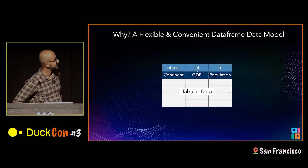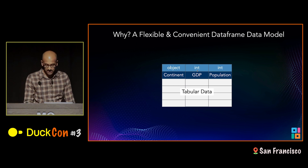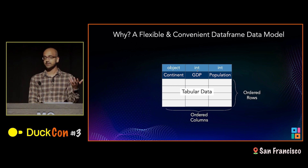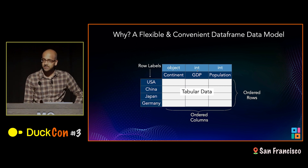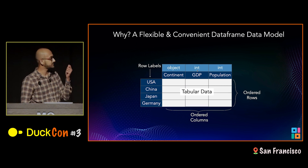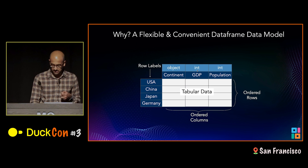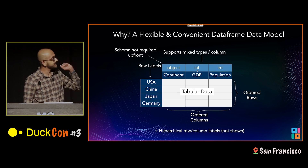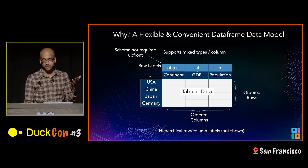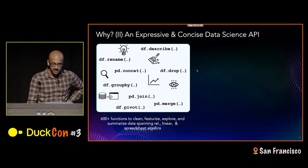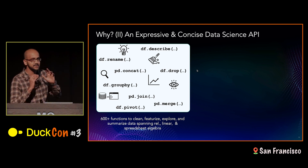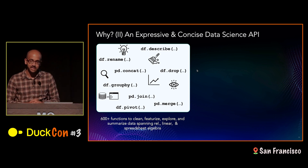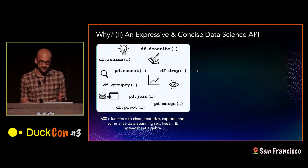Why is it so cool? Well, it's flexible and convenient. You start out with the tabular data model, but you also add in order, so you can refer to data by position based on the row number or the column number. You also have these convenient row labels, so you can give names to your rows and then refer to them by name. And it's also very flexible — schema is not required upfront, supports mixed types per column, and so on.